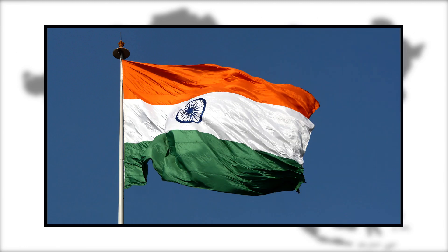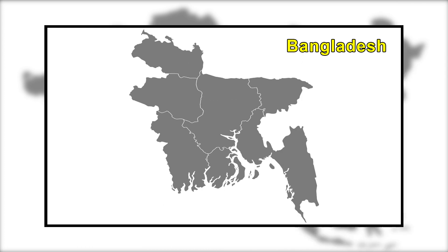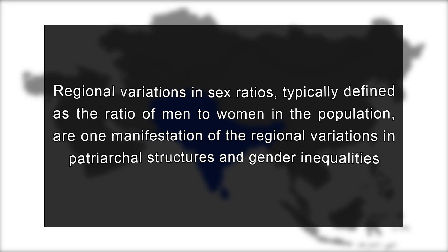In India, improvements in overall life expectancy have closed the gender gap in mortality rates among adults, but persisting gender discrimination among children and increasing resort to female-selective abortion has led to growing imbalance in child sex ratios and sex ratios at birth. In Bangladesh, by contrast, fertility decline has been accompanied by a closing of the gender gap in mortality in all age groups. Regional variations in sex ratios, typically defined as the ratio of men to women in the population, are one manifestation of the regional variations in patriarchal structures and gender inequalities.